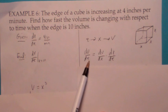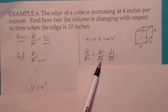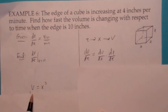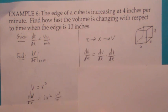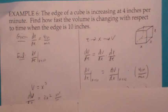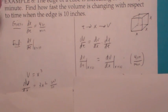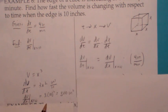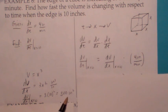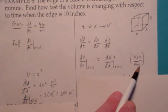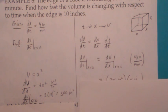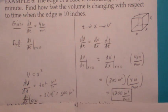You want to find dV/dt when x equals 10. They give you dx/dt but not dV/dx — you're supposed to figure that out. Since v equals x cubed, dV/dx is 3x squared. When x equals 10, dV/dx equals 300 square inches. So when you plug in 300 square inches for dV/dx and 4 inches per minute for dx/dt, the final answer is 1200 cubic inches per minute.